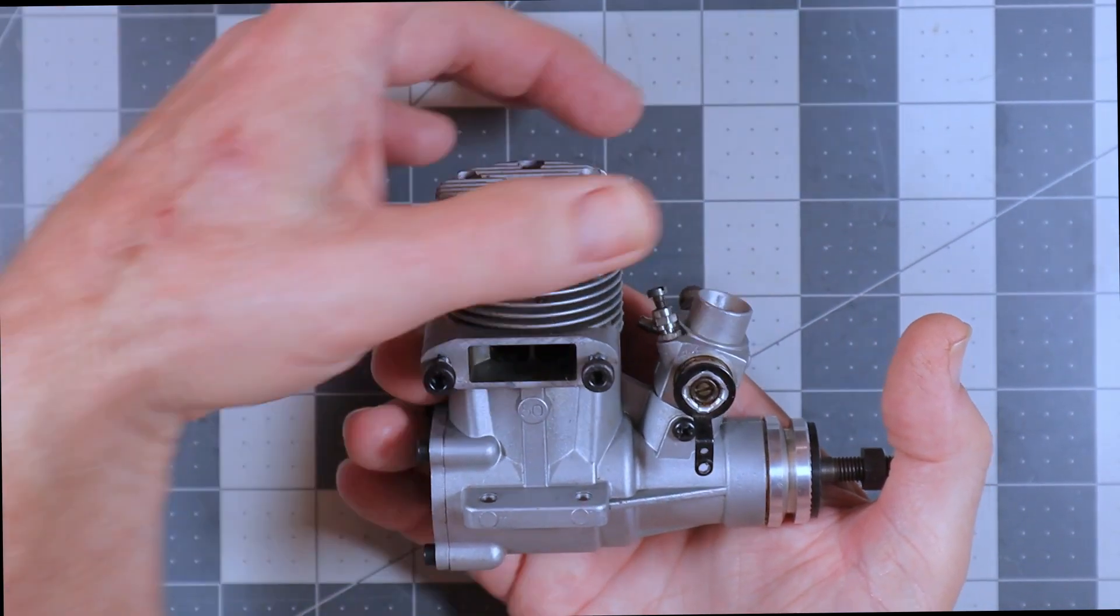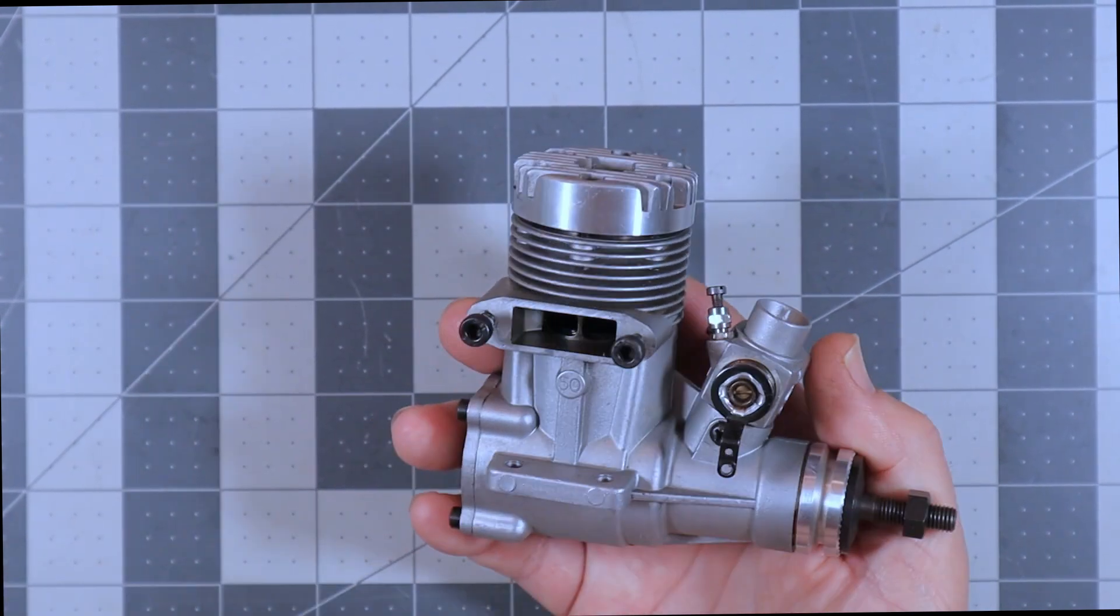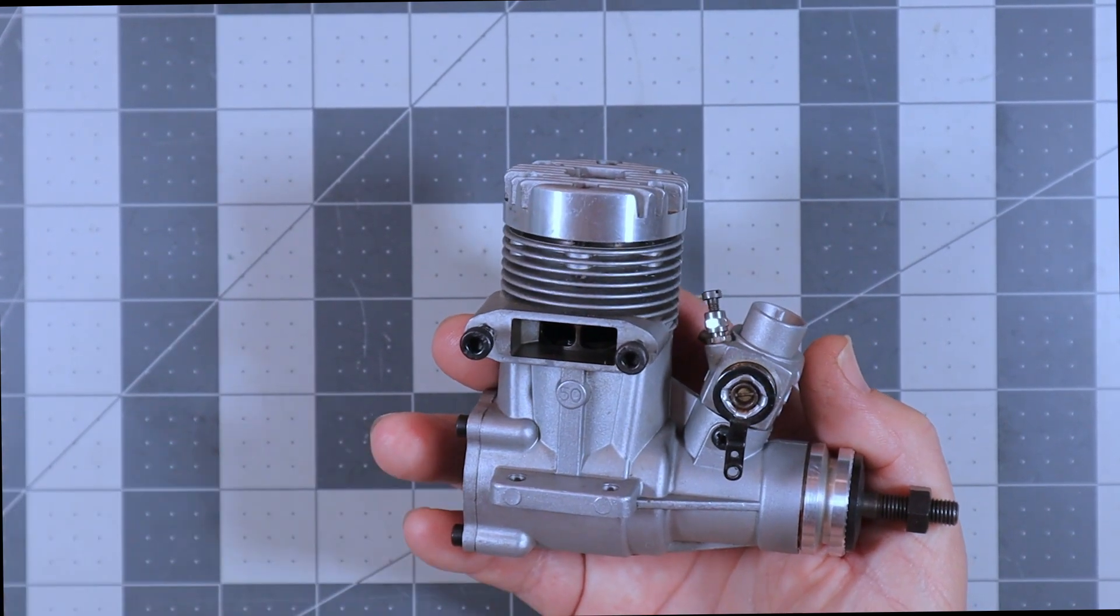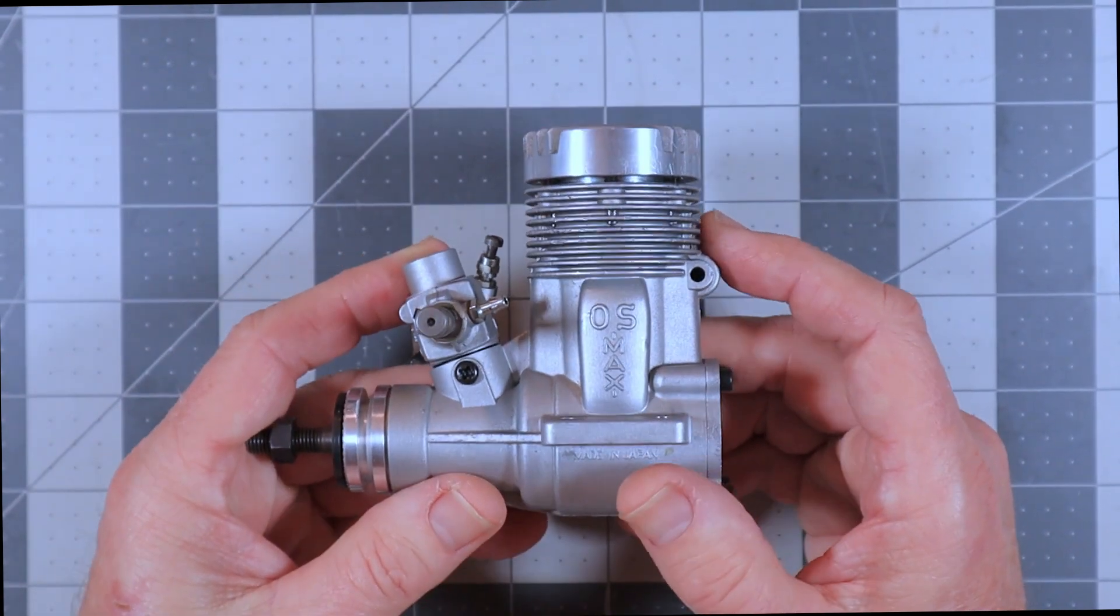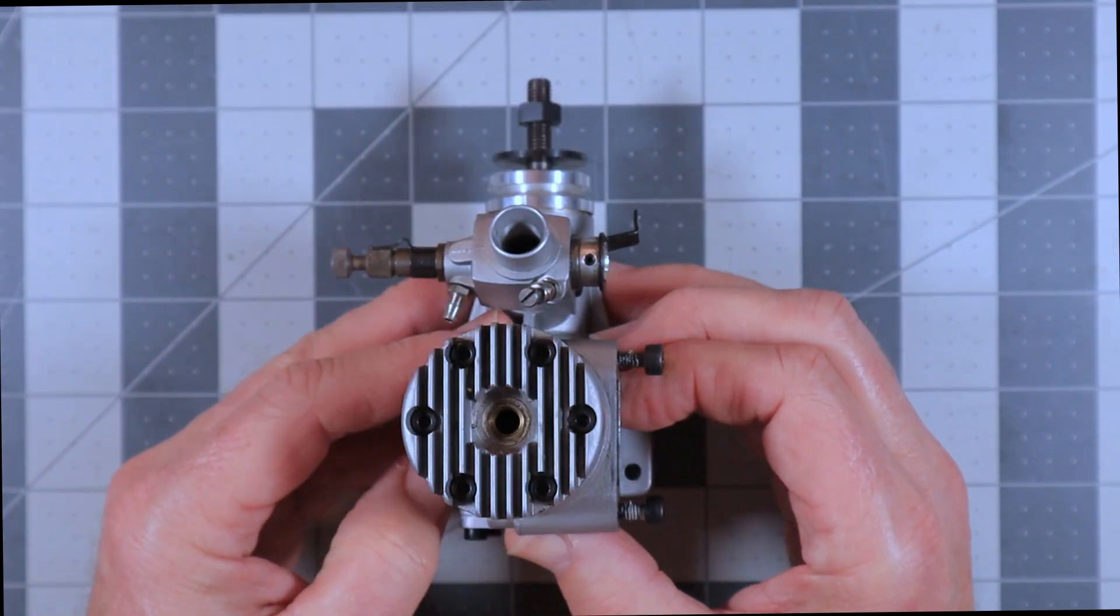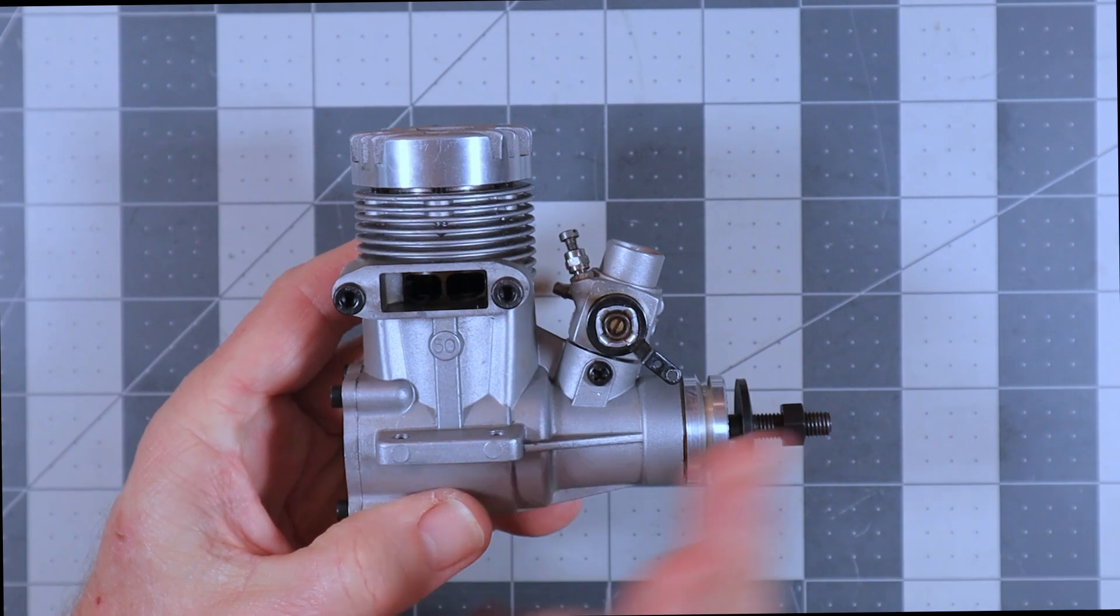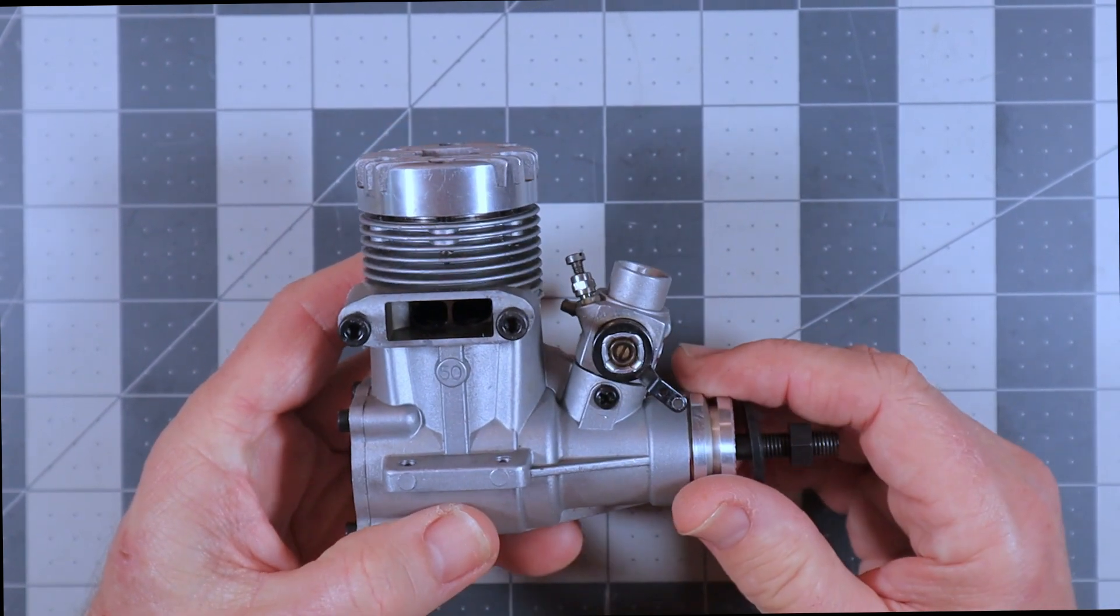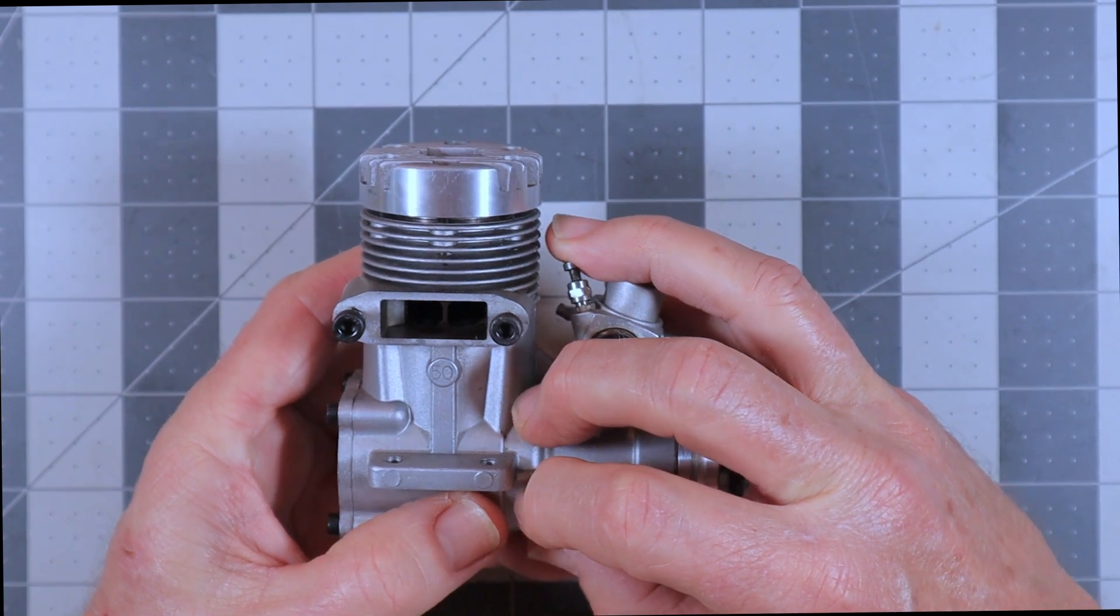This was a specifically designed helicopter engine that they just two years later made an aircraft variant for. The helicopter engine had a nice big square head. It didn't come with an exhaust, but they did offer exhaust for the helicopters at the time.